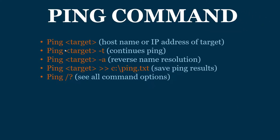Here are a few commands I've already demonstrated. Ping with a target by hostname or IP address. To continuously ping, use ping -t. The -a flag does a reverse name resolution — if you know an IP address, you can do ping -a [IP address] and it will check if there's a DNS record for it. You can also save your ping results to a text file, and to see all command line options just run ping /?.